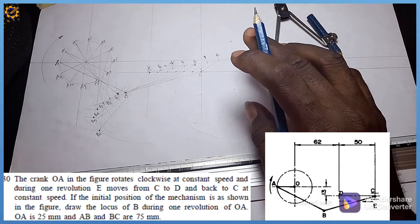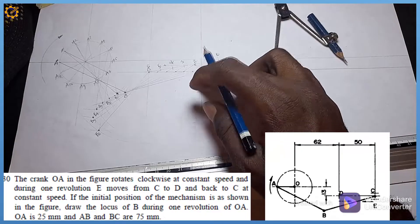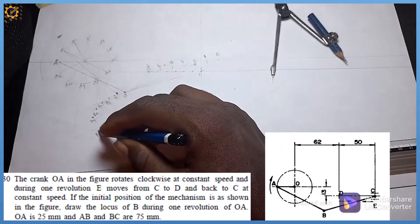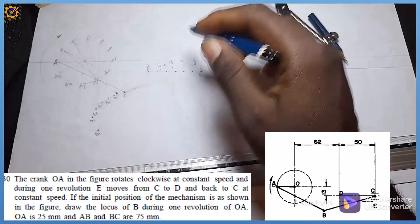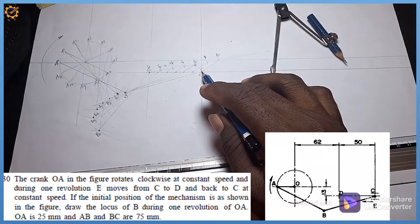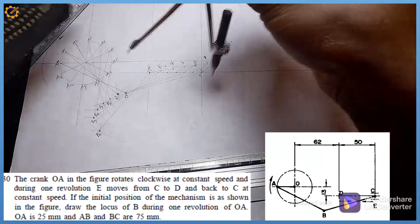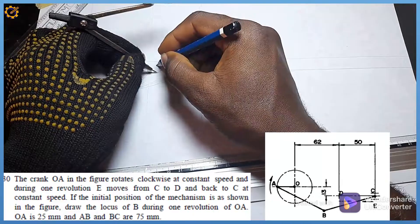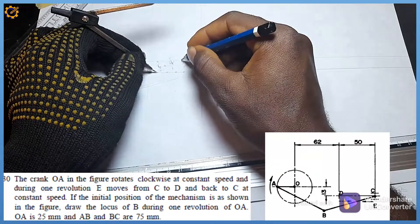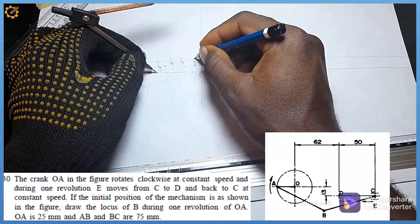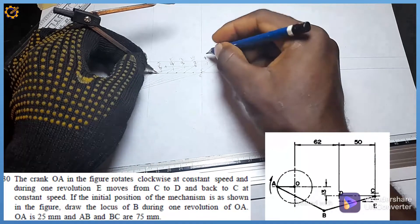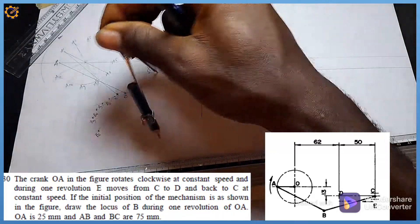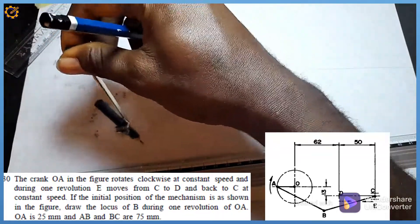As the question states, at constant speed point E moves from C to D, and we are now at mark D having found B6. To progress to A7 onward, point E starts moving backwards toward C. So for B7 I use C5, for B8 I use C4, for B9 I use C3, for B10 I use C2, and for B11 I use C1. On C7 (using C5) I draw the arc.